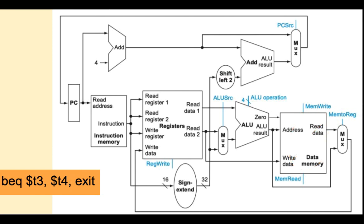We've built a simple MIPS CPU for a subset of instructions. Each instruction executes in one long clock cycle. Next time, we'll look at how control signals are generated.